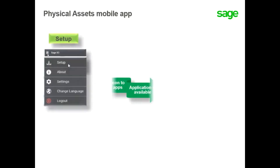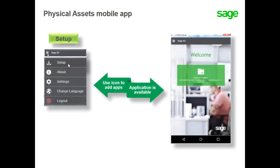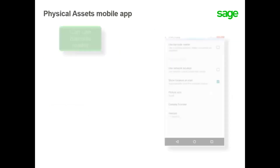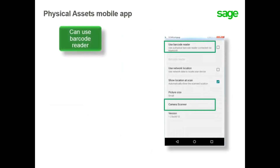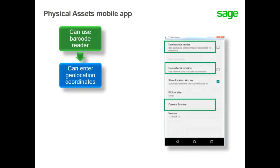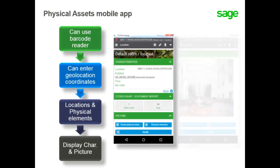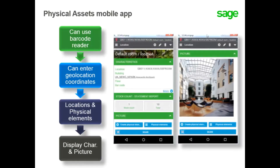After setting up the mobile application on a mobile phone or tablet, you are able to manage physical assets. You can use a barcode reader with a Bluetooth or camera scanner. The app also allows use of network location to enter geolocation coordinates on an asset or location. You can create locations, physical elements, as well as display characteristics and associate a picture with the asset and perform all the necessary actions for physical asset management.